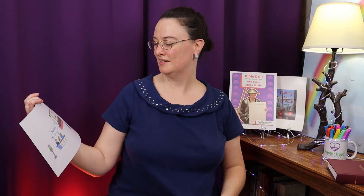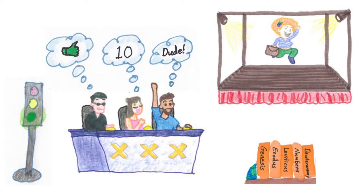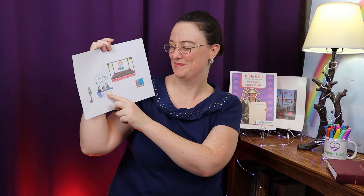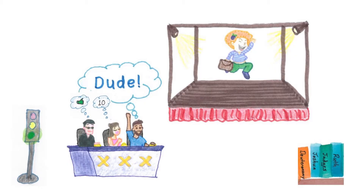Last time we saw the judges at the judges table, and we said that last judge said 'Dude!' His name is Joshua. The judges are looking at Ruth who's up on the stage. What's the last book of Old Testament law? Deuteronomy. Dude! The book that comes after is Joshua. So here we have 'Dude!' — Joshua judges Ruth. Those are our first three books of Old Testament history.